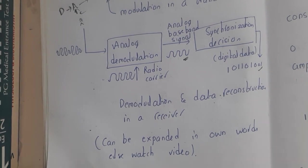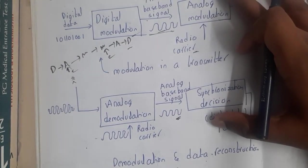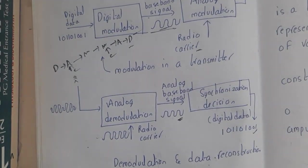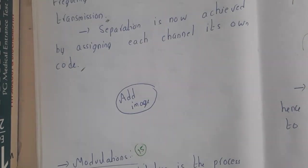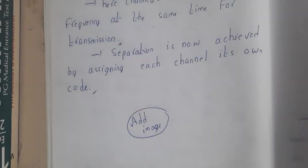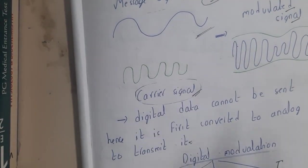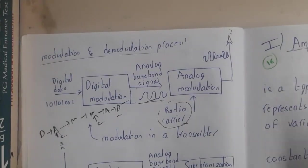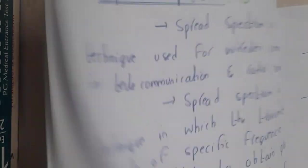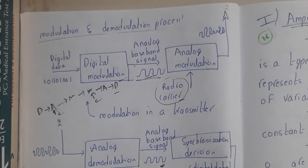If a question is asked about how the modulation or demodulation process works, you can draw these two block diagrams and explain in your own words. The main word to remember is the carrier signal — we always remember the message signal, but often forget the carrier signal. In the next lecture we'll be discussing Amplitude Shift Keying and Frequency Shift Keying. Thank you for watching.